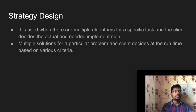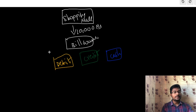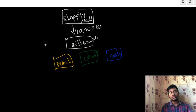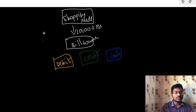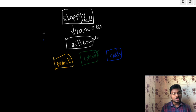The second point is: multiple solutions exist for a particular problem and the client decides at runtime based on specific criteria — here, the criteria are the availability of funds and the availability of liquid cash. Based on those criteria we choose the best solution at runtime. In the next video we will cover the strategy design pattern real-time implementation using a use case. Thanks for watching.